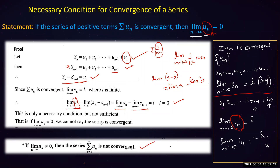One important point: if the limit is not equal to zero, then certainly the series is not convergent — it is divergent. So: if the series is convergent then the limit is zero; but if the limit is zero we cannot say anything about convergence; and if the limit is not zero then the series is certainly divergent.